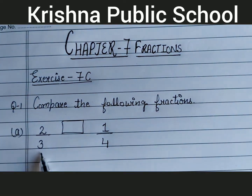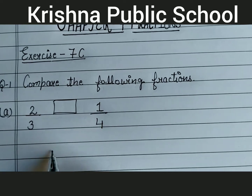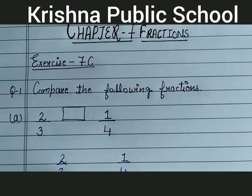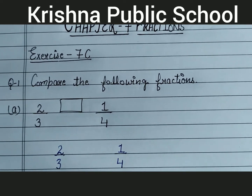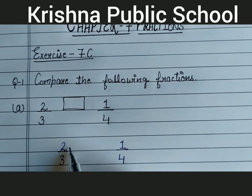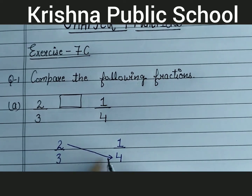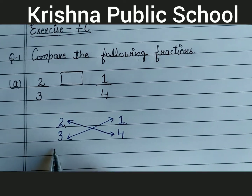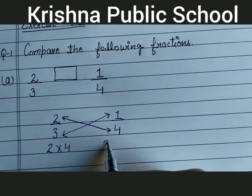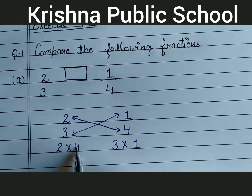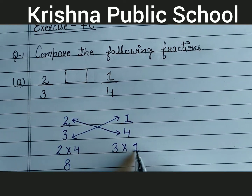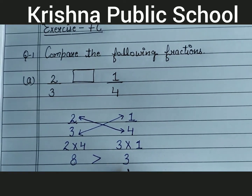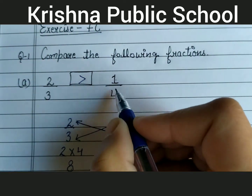The first is 2 upon 3 and 1 upon 4. Write these fractions: 2 upon 3, 1 upon 4. Compare 2 upon 3 and 1 upon 4 by cross multiplication. That is, 2 multiply 4 and 3 multiply 1. 2 multiply 4 equal to 8, 3 multiply 1 equal to 3. So, 8 is greater than 3, therefore 2 upon 3 is greater than 1 upon 4.